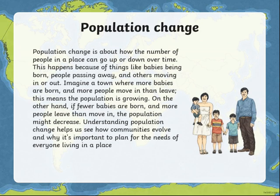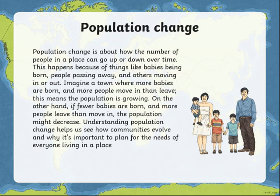Then we have another concept, which is Population Change. Population Change is about how the number of people in a place can go up or down over time. This happens because of things like babies being born, people passing away, and others moving in or out. Imagine a town where more babies are born and more people move in than leave — this means the population is growing gradually. On the other hand, if fewer babies are born and more people leave than move in, the population might decrease. Understanding Population Change helps us see how communities evolve and why it's important to plan for the needs of everyone living in a place.